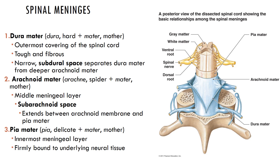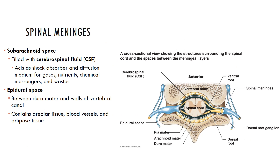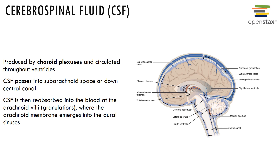In adults, CSF can be safely withdrawn in a procedure known as a lumbar puncture or spinal tap, where a needle is inserted into the subarachnoid space in the lumbar region inferior to the tip of the conus medullaris. Cerebral spinal fluid is produced by the choroid plexus and circulates through the ventricles.